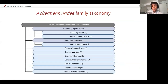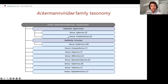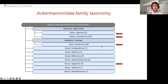Now I'd like to introduce you to the Ackermannviridae family. Currently it consists of ten different genera and two subfamilies. When I started three years ago, there were only four genera: Agtrevirus, Limestonevirus, Cotavirus, and Taipeivirus. When I talk about Ackermannviridae phages from now on, it's mainly these four different genera, as not much is known about the newer ones.